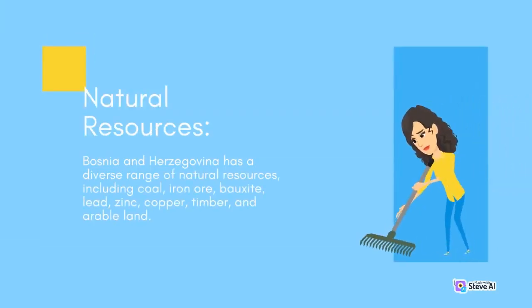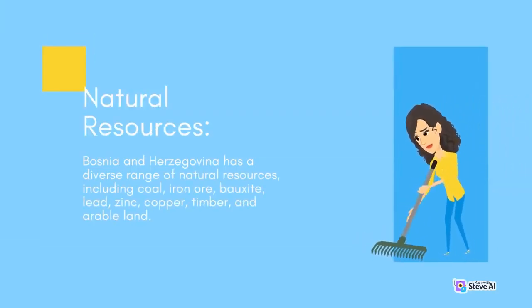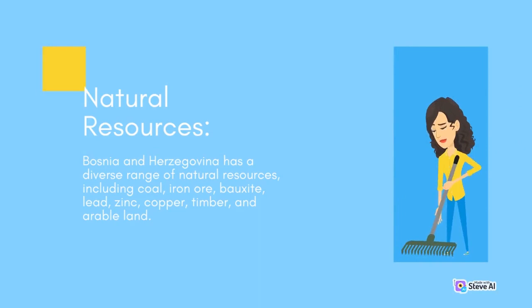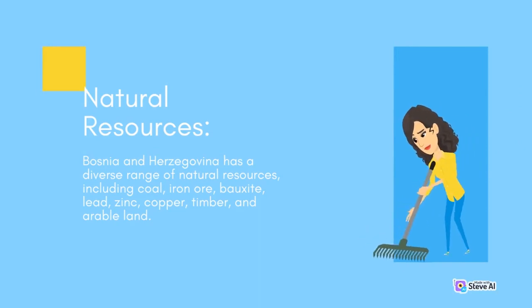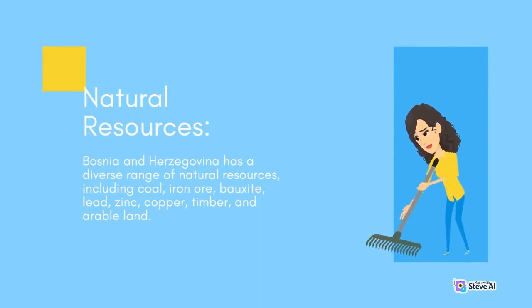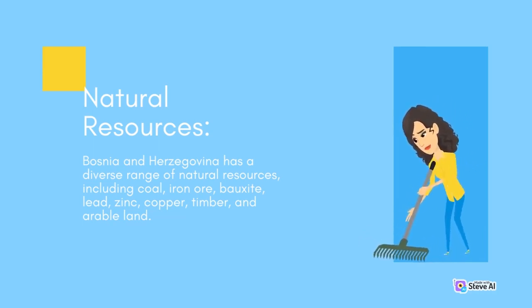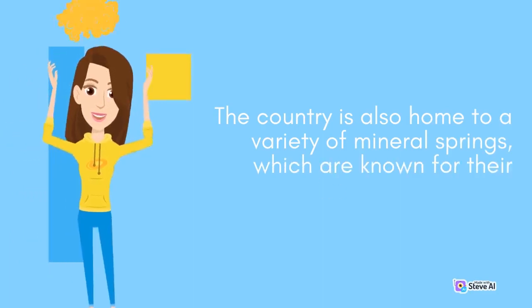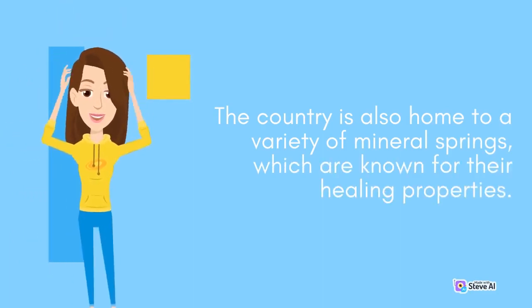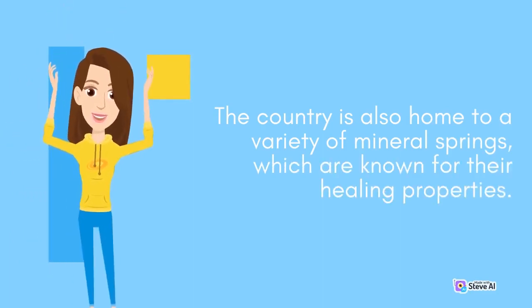Bosnia and Herzegovina has a diverse range of natural resources, including coal, iron ore, bauxite, lead, zinc, copper, timber, and arable land. The country is also home to a variety of mineral springs, which are known for their healing properties.